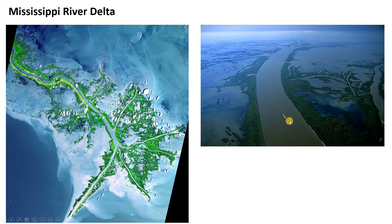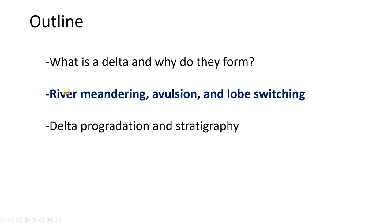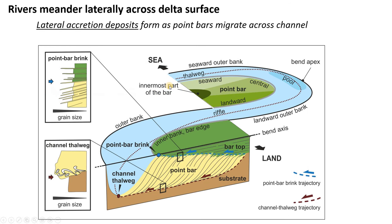Let's talk about river processes, because they're very important in shaping deltas and interpreting deltas formed in the past. Rivers tend to meander laterally across the delta surface. If a river channel is flowing downstream out to the sea, it doesn't stay in the exact same form year over year — it wants to move and meander. Specifically, we get erosion on the outer bank and deposition on the inner bank of a curve. Whenever the river makes a bend, it erodes the outside and deposits sediment on the inside, allowing the channel to move over time.